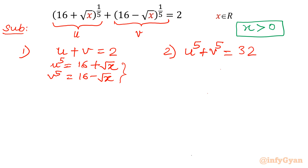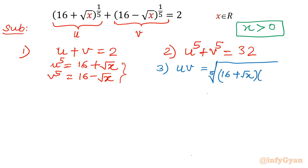Now the third equation is the product u·v. Since each is raised to the power 1/5, I can write (uv)⁵ = (16 + √x)(16 − √x). Applying the difference of squares formula, a² − b², we get 16² − (√x)² = 256 − x. So uv = (256 − x)^(1/5).